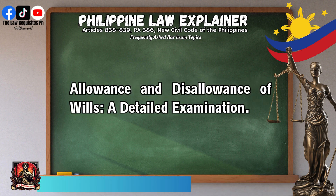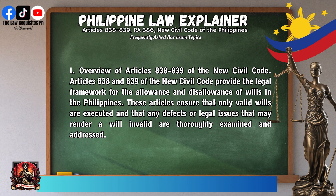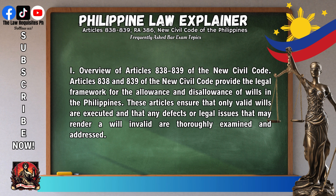Allowance and disallowance of wills — a detailed examination. Articles 838 and 839 of the New Civil Code provide the legal framework for the allowance and disallowance of wills in the Philippines. These articles ensure that only valid wills are executed and that any defects or legal issues that may render a will invalid are thoroughly examined and addressed.